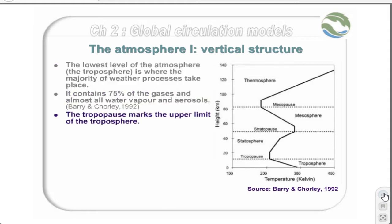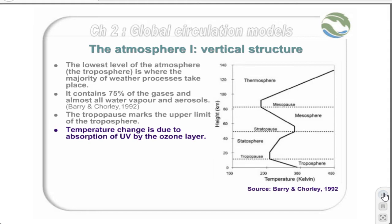The tropopause is an inversion layer which marks the upper limit of the troposphere. Above this, the stratosphere increases in temperature due to the absorption of UV radiation by the ozone layer. The stratosphere is very stable as a consequence, and is not subject to the sort of turbulence and weather variations of the troposphere.